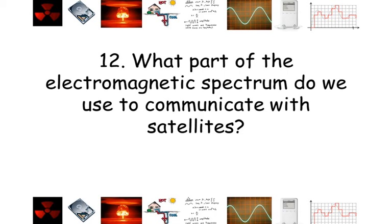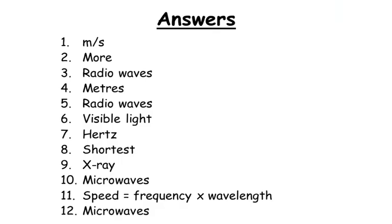Here are your answers. One: meters per second. Two: more. Three: radio waves. Four: meters. Five: radio waves. Six: visible light. Seven: hertz. Eight: shortest. Nine: X-ray. Ten: microwaves. Eleven: speed equals frequency times wavelength. And finally, twelve: microwaves.